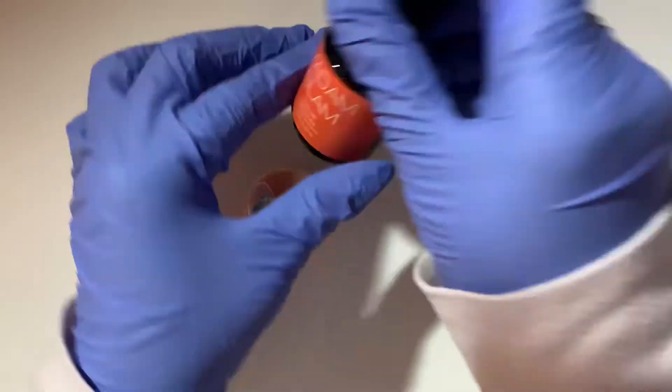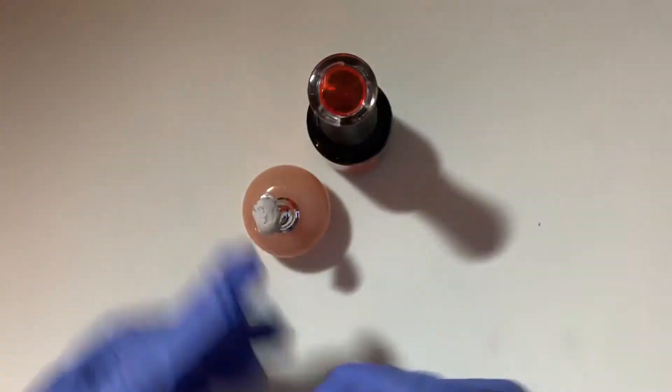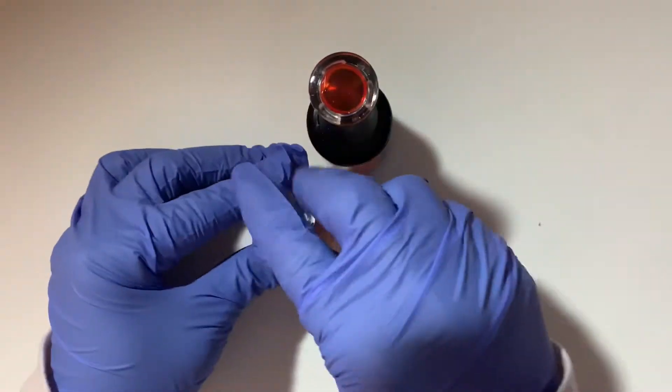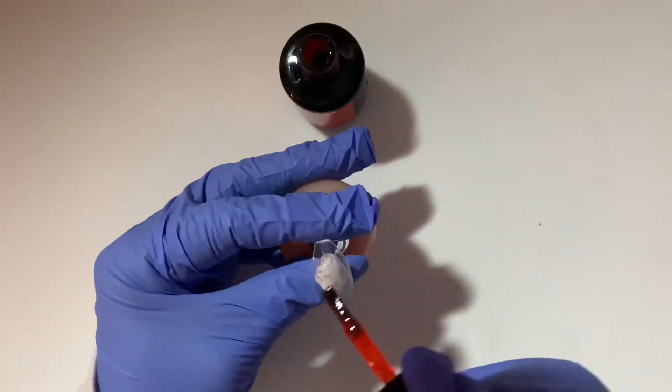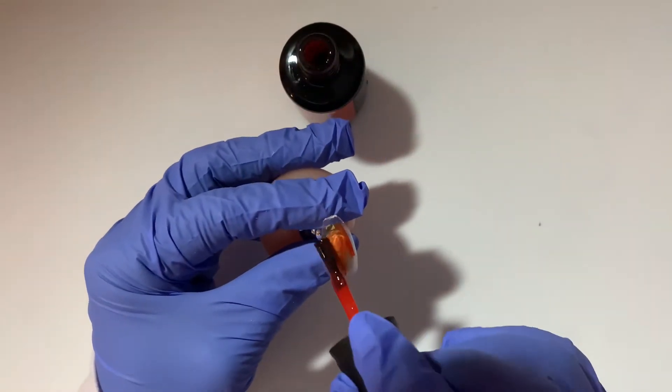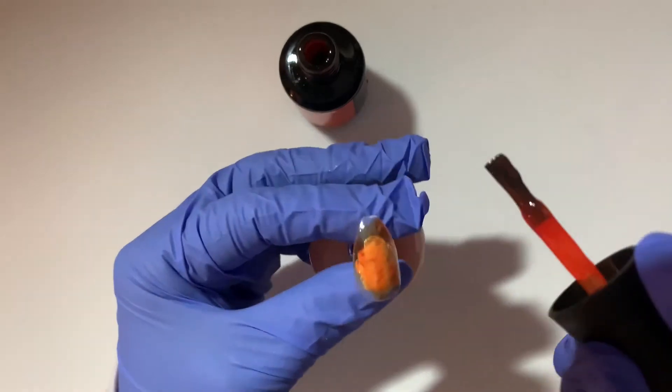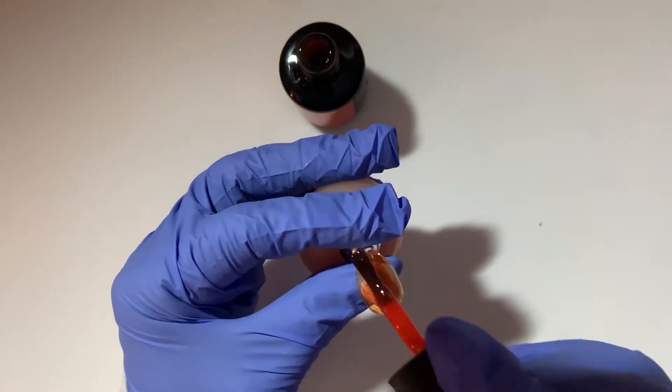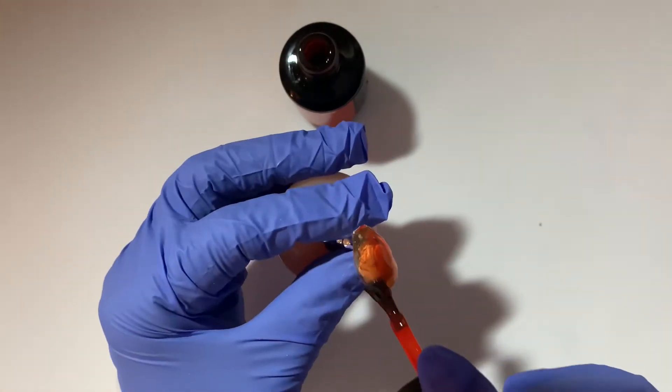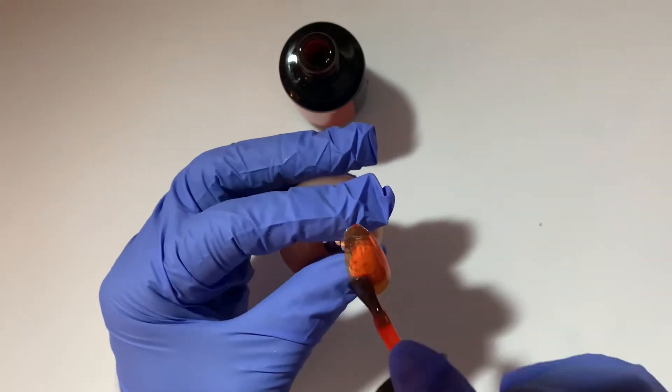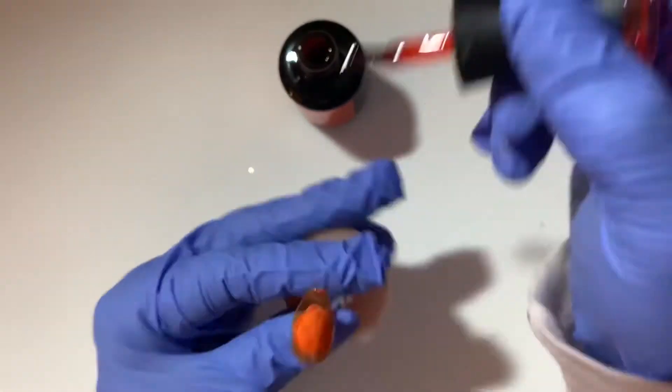The next color we're going to use is Brave Orange by Madam Glam. It looks really orange as I'm applying it, but you'll see in the next two or three steps I'll be using another color to diffuse that to give it more of an amber look and feel.